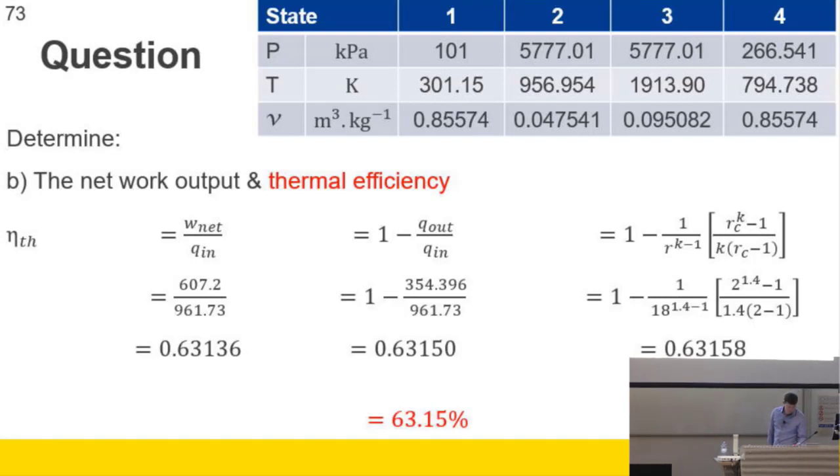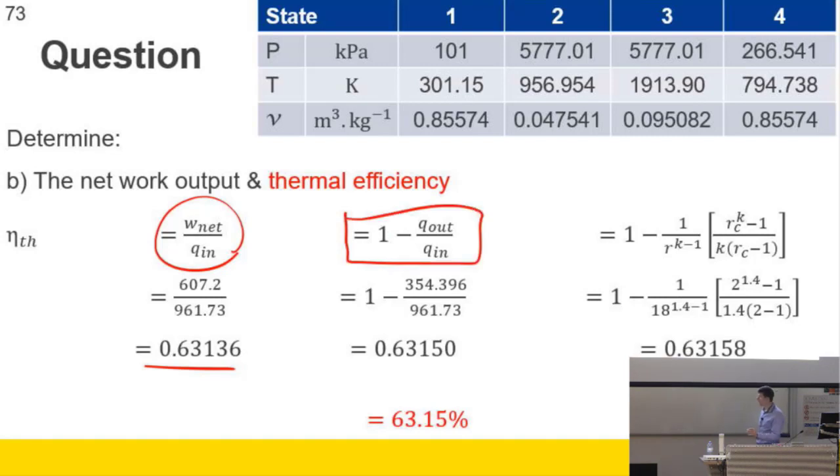If we're asked for the thermal efficiency, there's a few different ways we could do it. One is, what I think is the simplest definition of efficiency, but not necessarily the simplest calculation. Efficiency is what you want divided by what you had to put in to get it. 63%. We could also remember that efficiency for a heat engine is 1 minus Q out divided by Q in, which is something we've covered before, 63%. Or we could have remembered or been given the equation for the thermal efficiency of a diesel cycle, and you get the same thing.